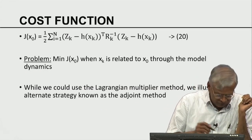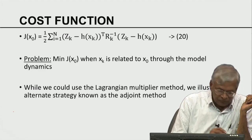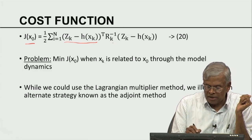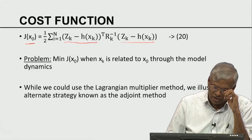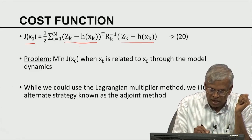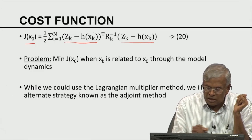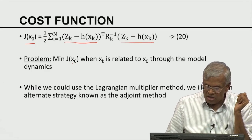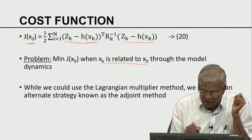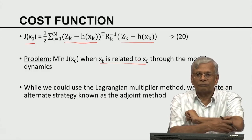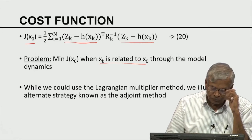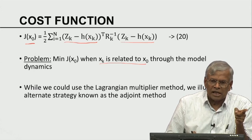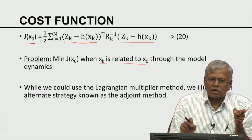The cost function J(x₀) is given by the sum: (zₖ - H(xₖ))ᵀ Rₖ⁻¹ (zₖ - H(xₖ)), which is the weighted sum of squared forecast errors. The problem is to minimize J(x₀), where xₖ is related to x₀ through the model dynamics — this is an implicit minimization problem. In the linear case we could explicitly write xₖ = Mᵏ x₀, but in the non-linear case it is much more difficult and must be handled with more care.